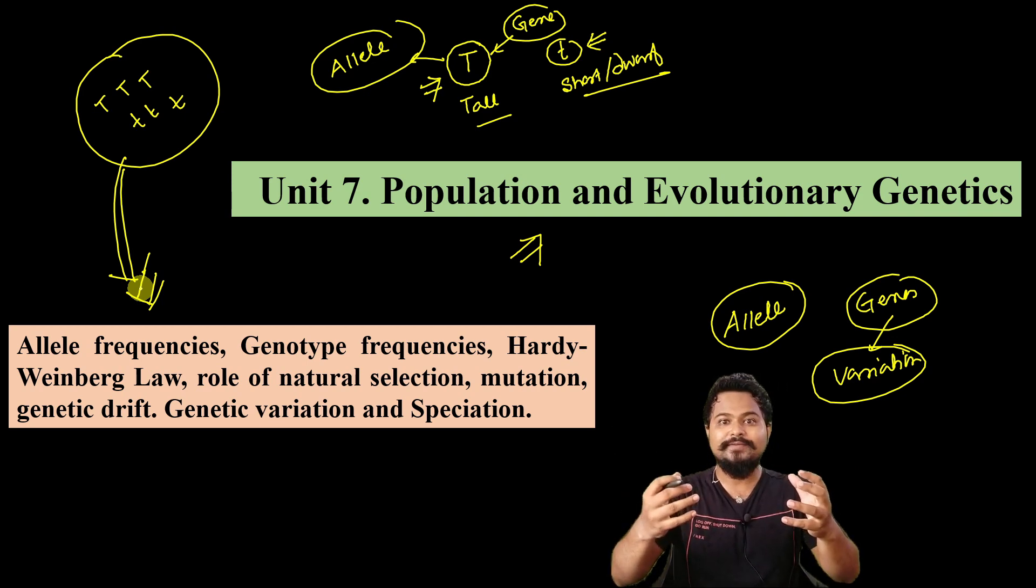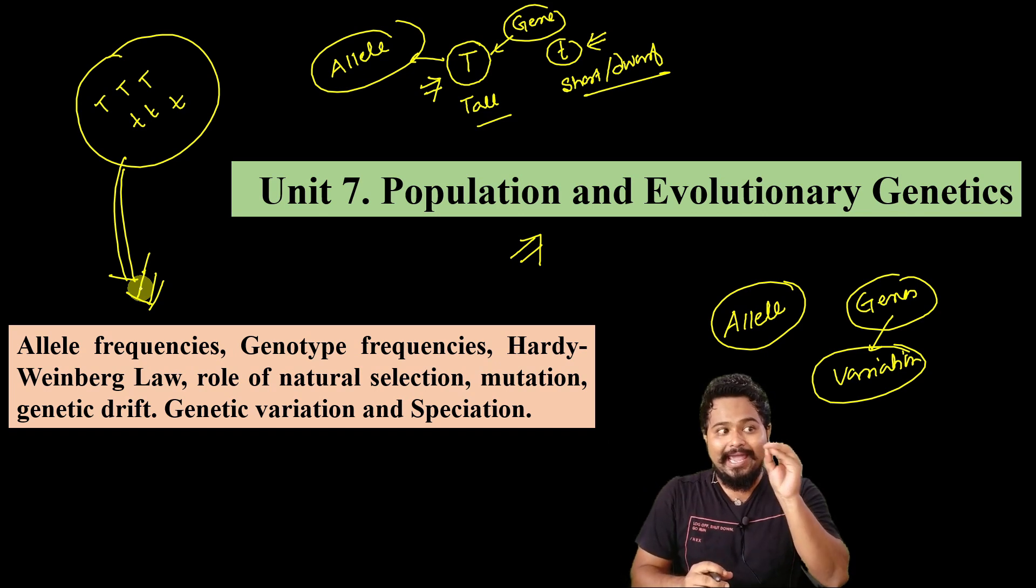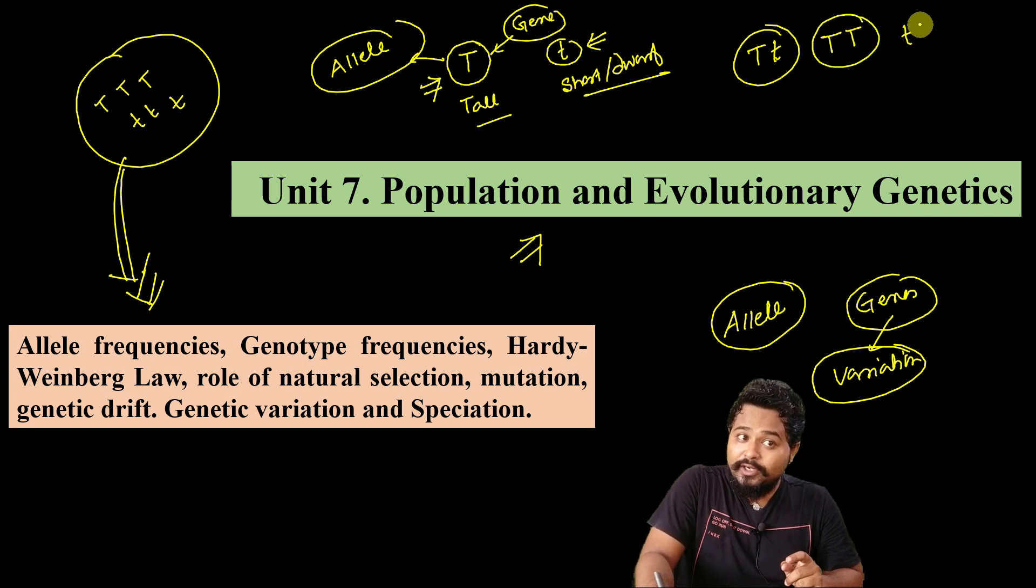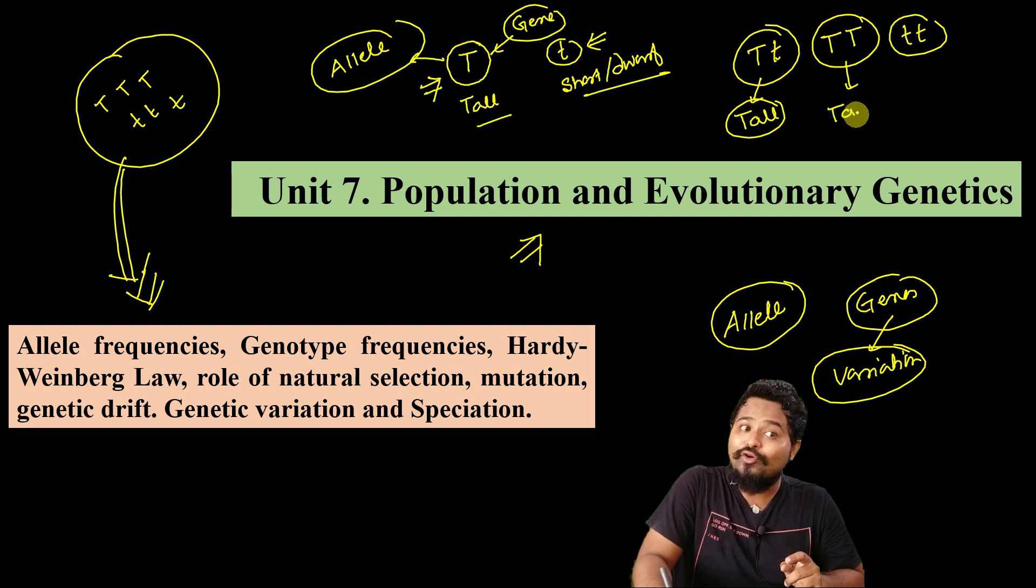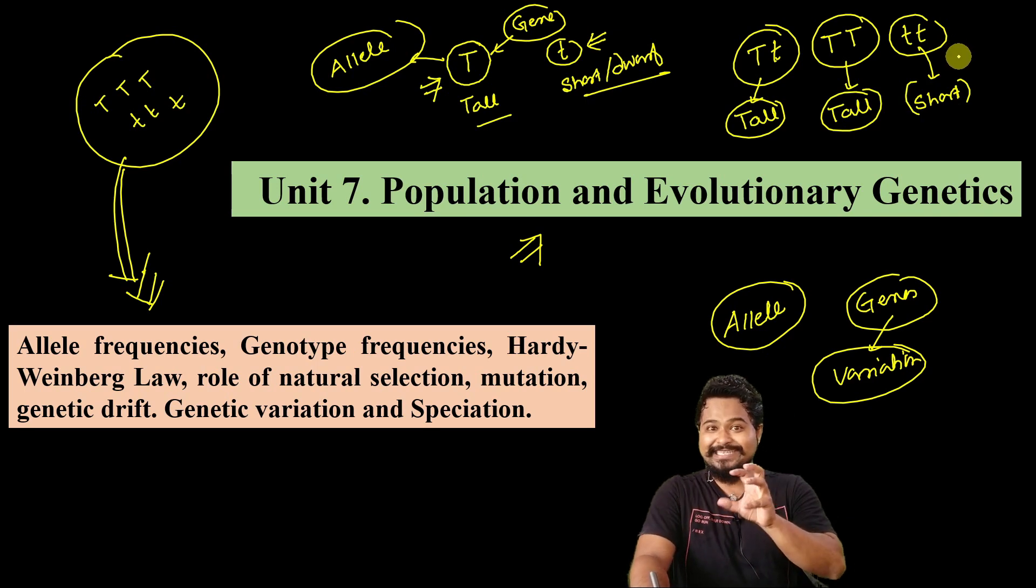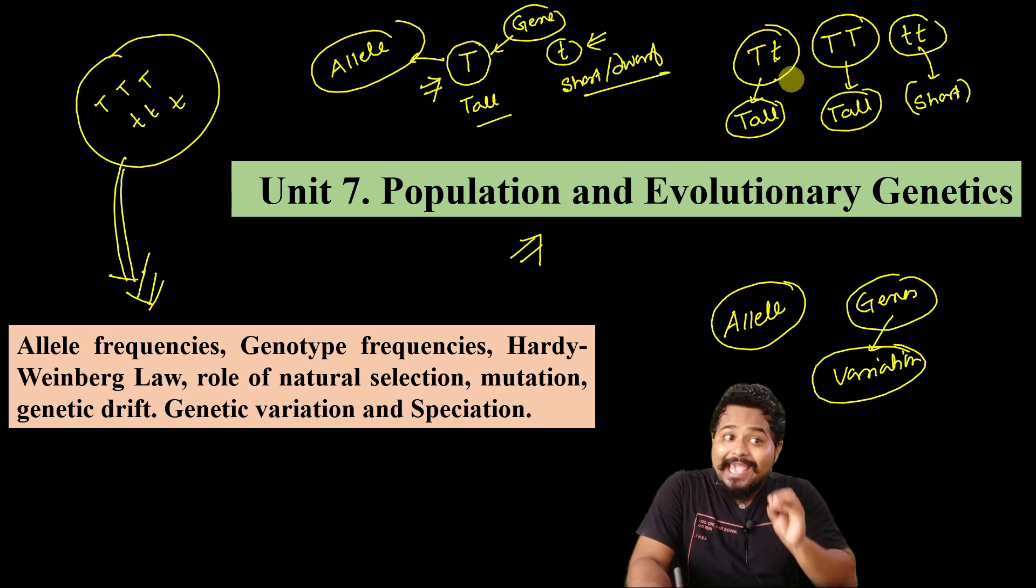Genotype frequency - what is it? These alleles come together. In diploid condition, a plant can be capital T small t, or capital T capital T, or small t small t. Capital T small t and capital T capital T will be tall because capital T is dominant. Small t small t will be short or dwarf because it's the recessive allele.